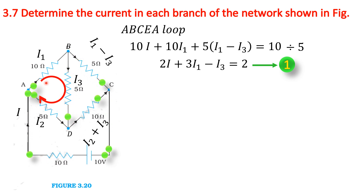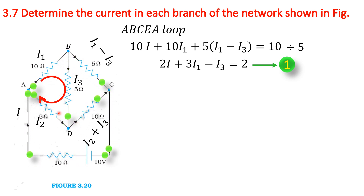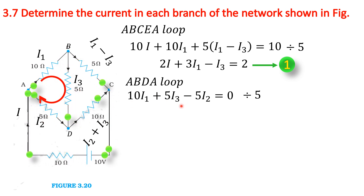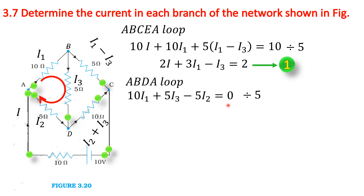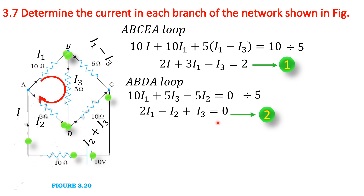Next, we consider the A-B-D-A closed loop. For the first two resistors, the loop and current directions are the same. For the third resistor, the loop and current directions are opposite, so its potential difference gets a negative sign. The equation becomes 10I1 plus 5I3 minus 5I2 equals 0. Dividing by 5, we get 2I1 minus I2 plus I3 equals 0. This is Equation 2.